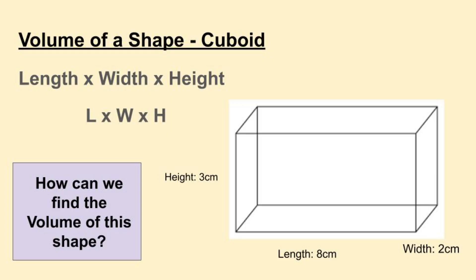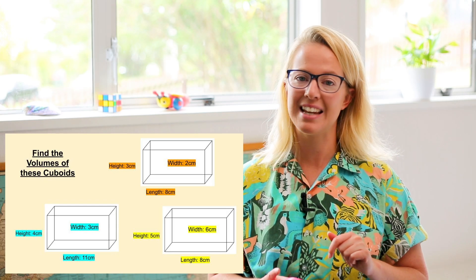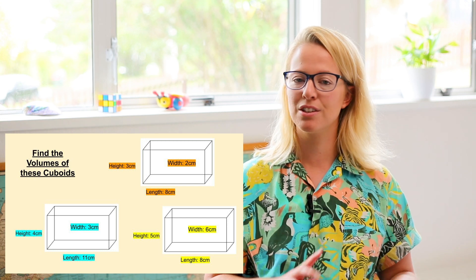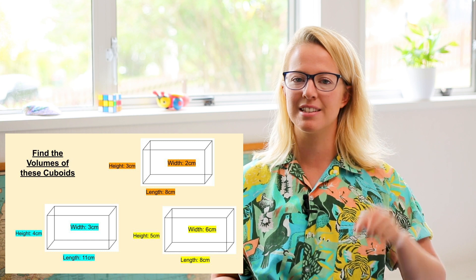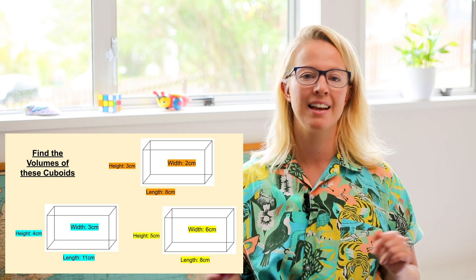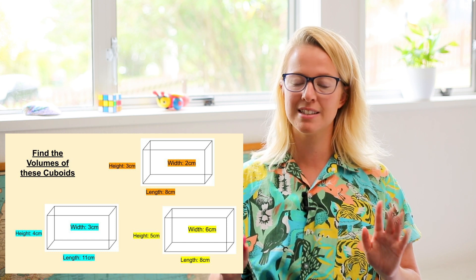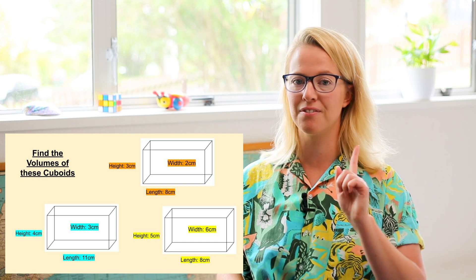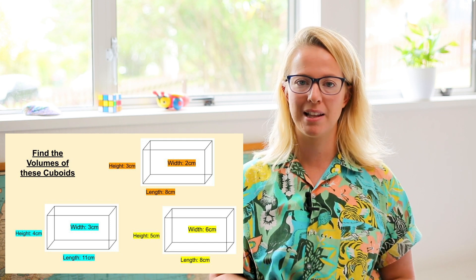Let's try another one. We need to do length times width: 8 times 2 equals 16. Now multiply 16 by the height of 3: 16 times 3 equals 48 — make sure you write centimeters cubed at the end. Now I've got your next activity: you can pause the video on these three cuboids and try to solve them before moving on to find the answers. When you press play, the answers will come up next.